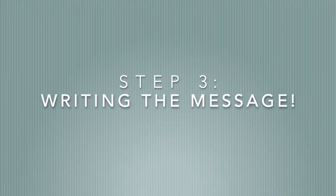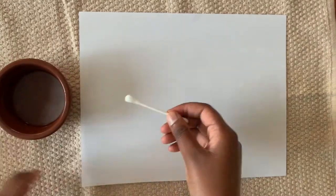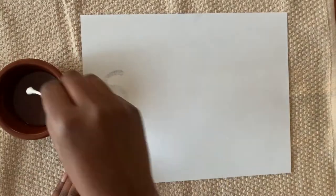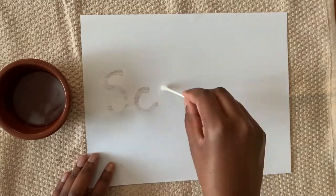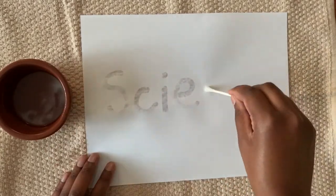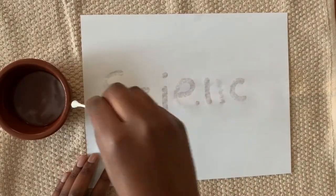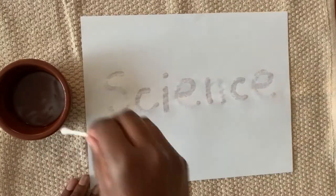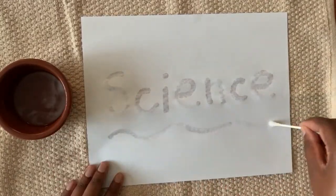Now we're ready to write our secret message. Using a q-tip, write your message on a white piece of paper with your baking soda solution. Make sure to keep dipping in your solution. Wait until your message is dry.